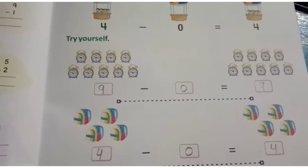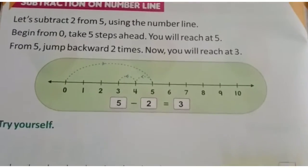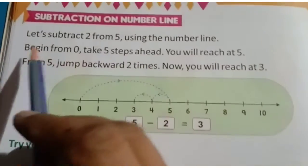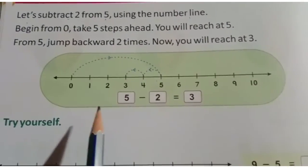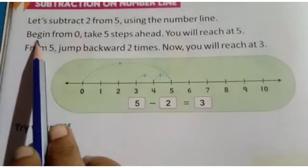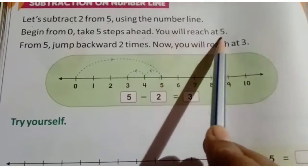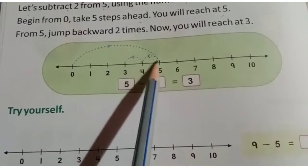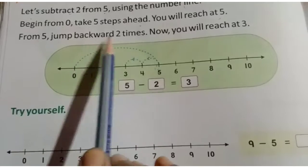Now next type of question: subtraction on the number line. We will practice how to do subtraction on the number line. Let's subtract two from five using the number line. Begin from zero, take five steps ahead. First, since we're working with five, we go five steps forward from zero. You will reach at five — see, starting from zero, five steps forward brings you to five.